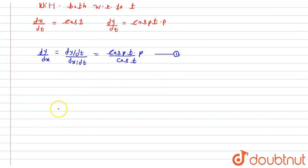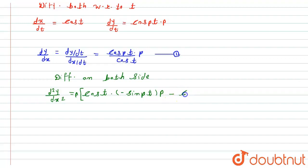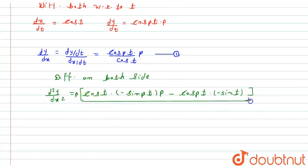Now I will again do the differentiation on both sides. Differentiating both sides, d²y/dx² will be equal to, using the u over v formula. cos(t) times the derivative of p·cos(pt) — where p is constant — gives minus p·sin(pt) into p, minus cos(pt) times the derivative of cos(t) which is minus sin(t), all divided by v squared, which is cos²(t).